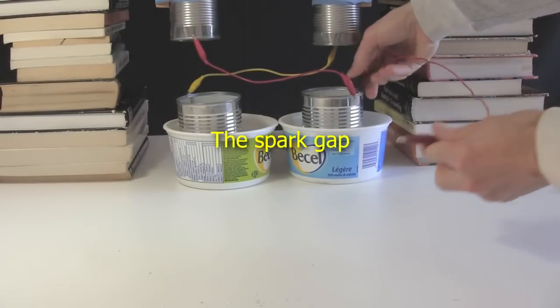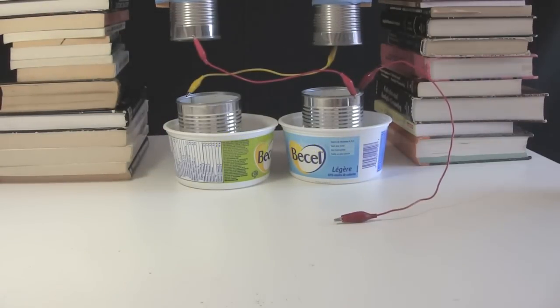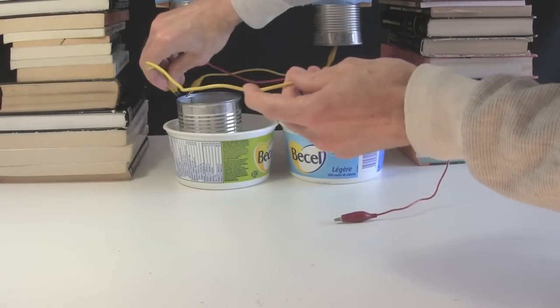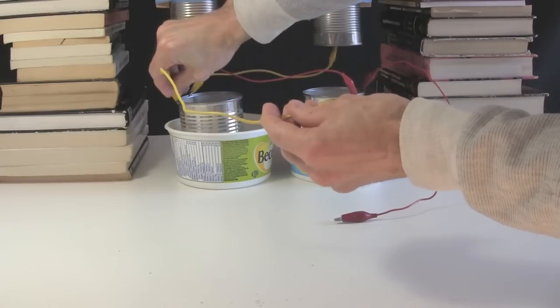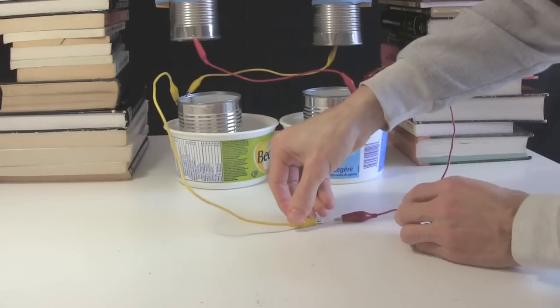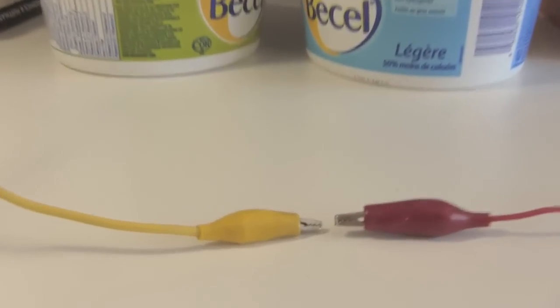And lastly, the spark gap. Connect wires to the receivers and extend the other ends so that they come close together, a millimeter or so to start with. That end is the spark gap, the gap in the air where the spark will happen.